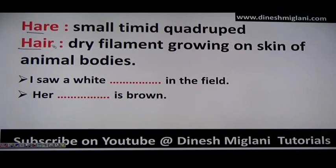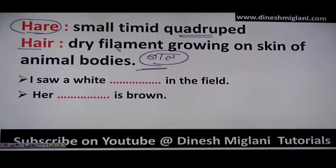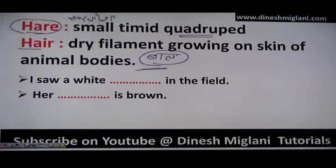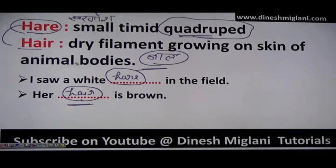Next: 'hare' (H-A-R-E) and 'hair' (H-A-I-R). Hare is a small timid quadruped — in Hindi called 'khargosh,' an animal with four legs. Hair is the dry filament growing on the skin of a human or animal body. Example: 'I saw a white hare in the field' — the animal. 'Her hair is brown' — the filament on the body.